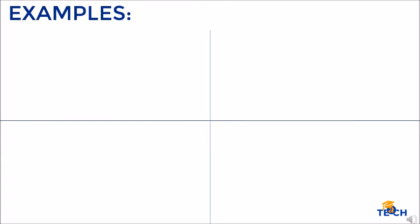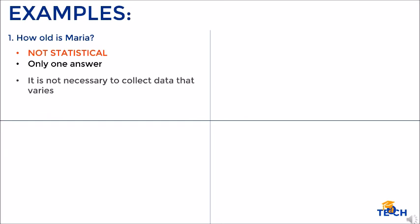Okay, let's have an example. Identify if the question is statistical or not statistical. Number one: How old is Maria? Not statistical, because this question has only one answer and it is not necessary to collect data that varies.